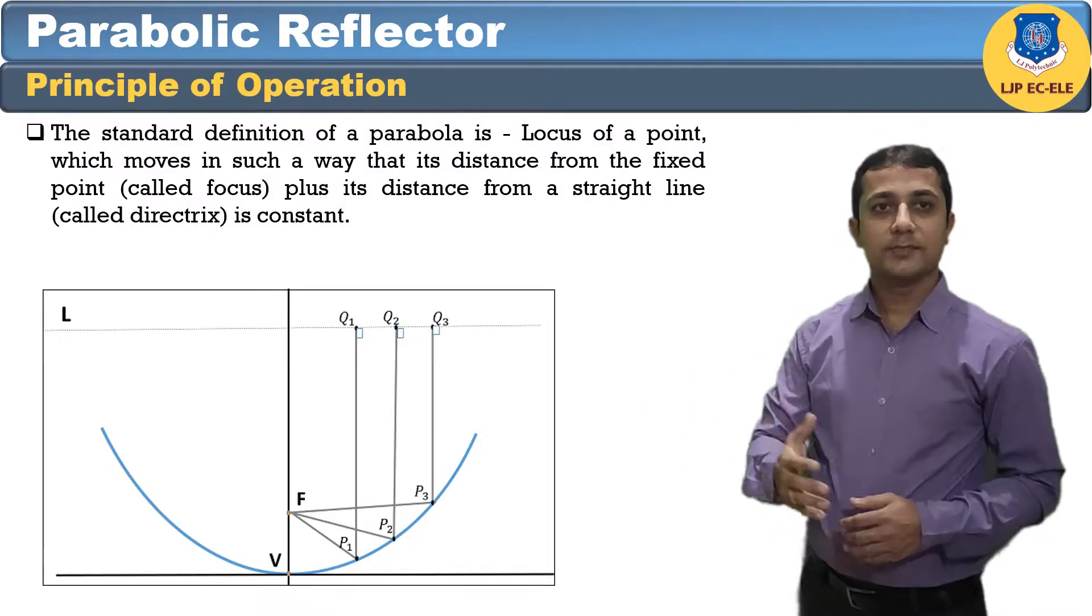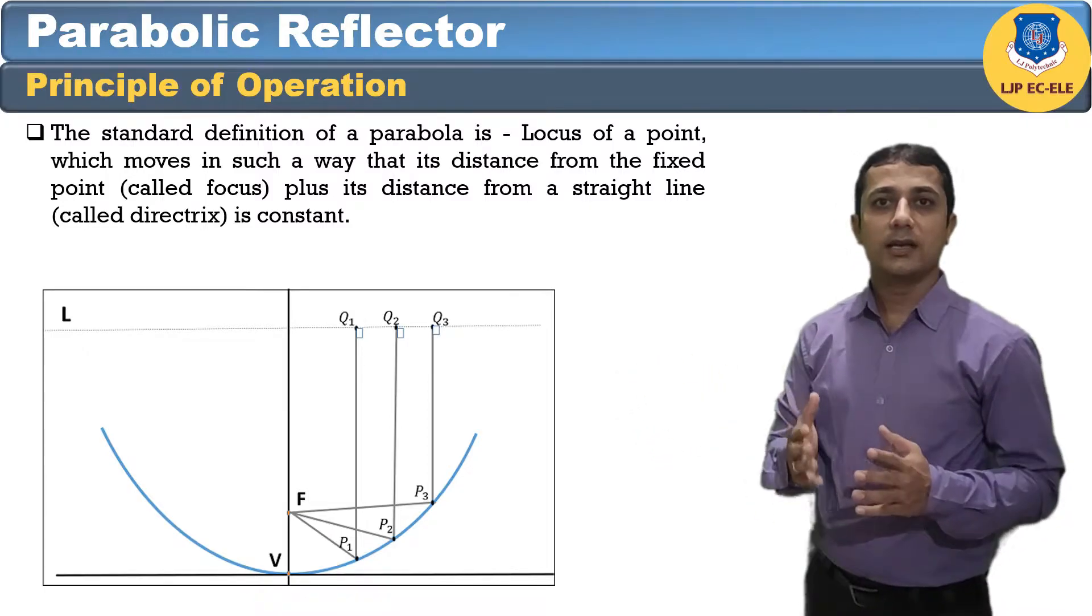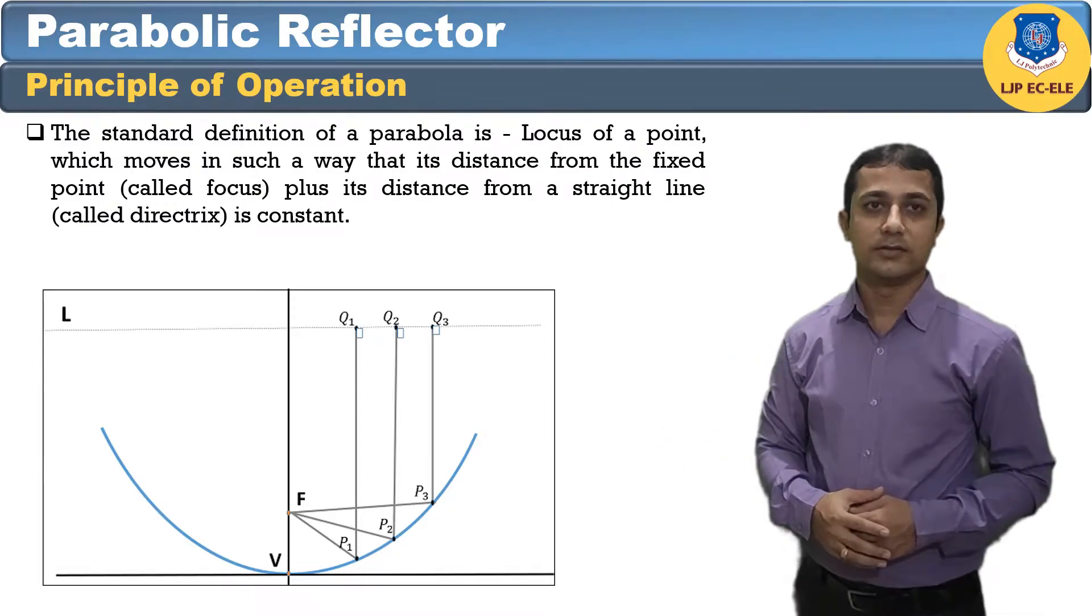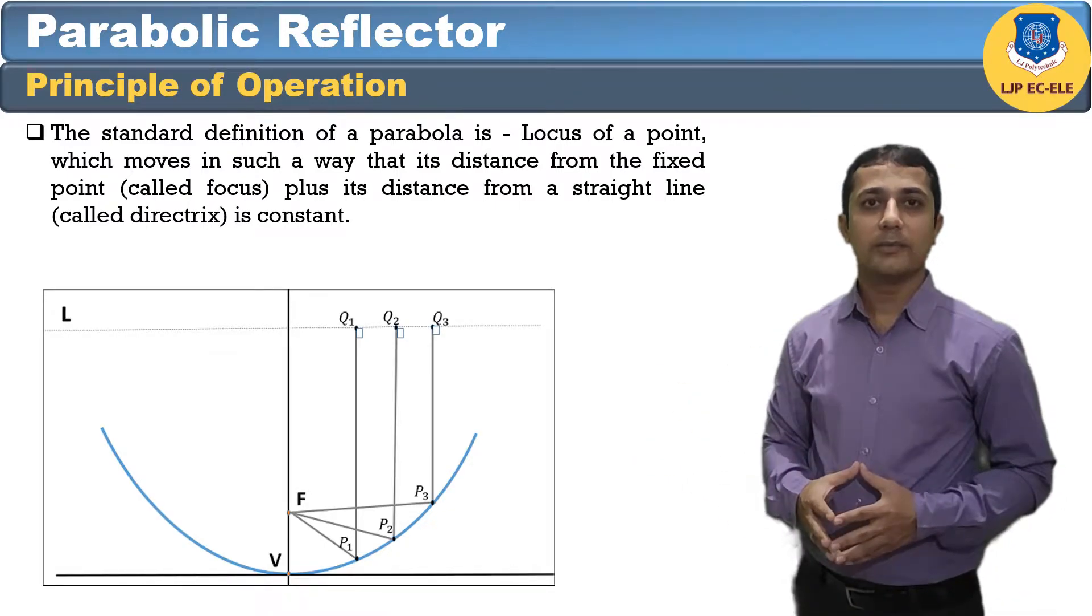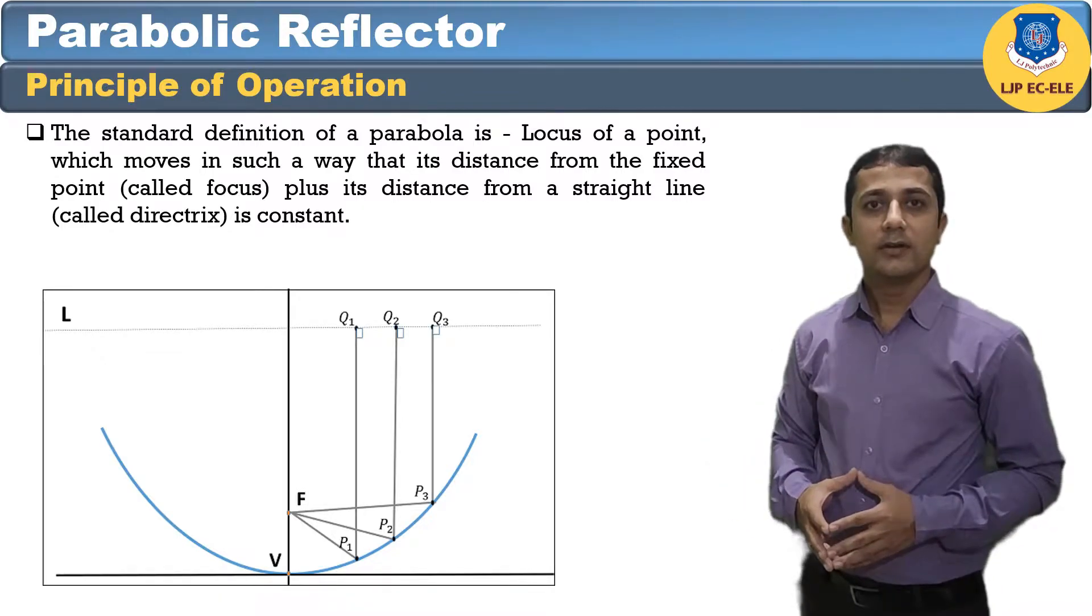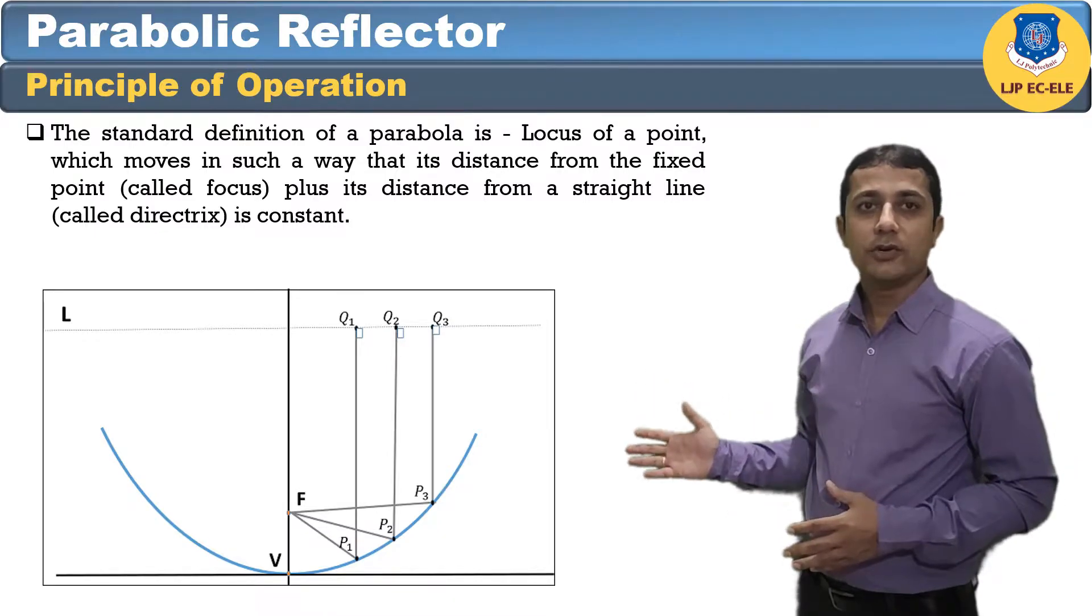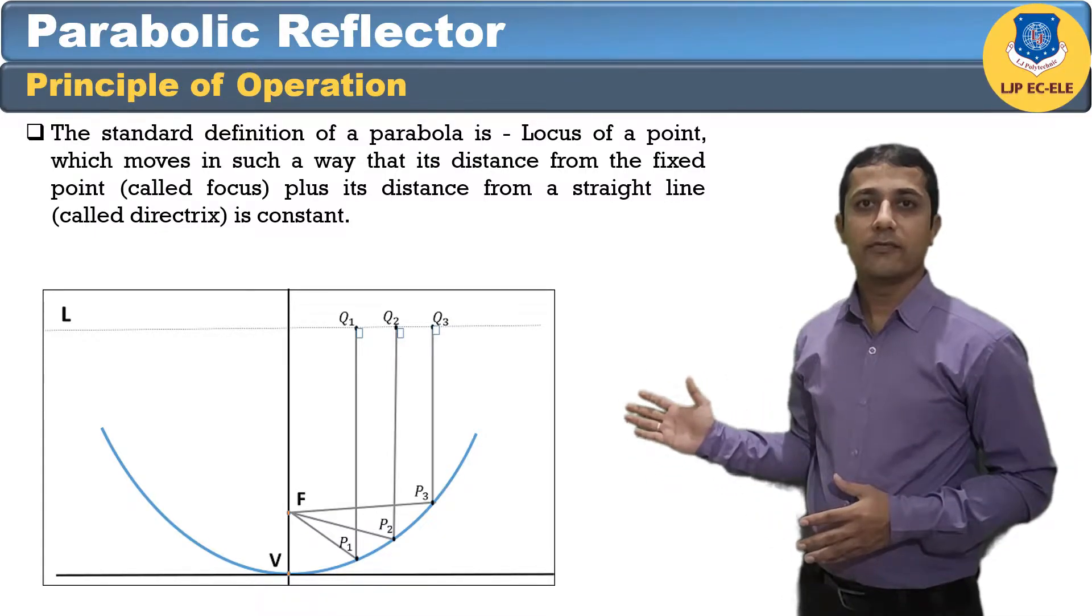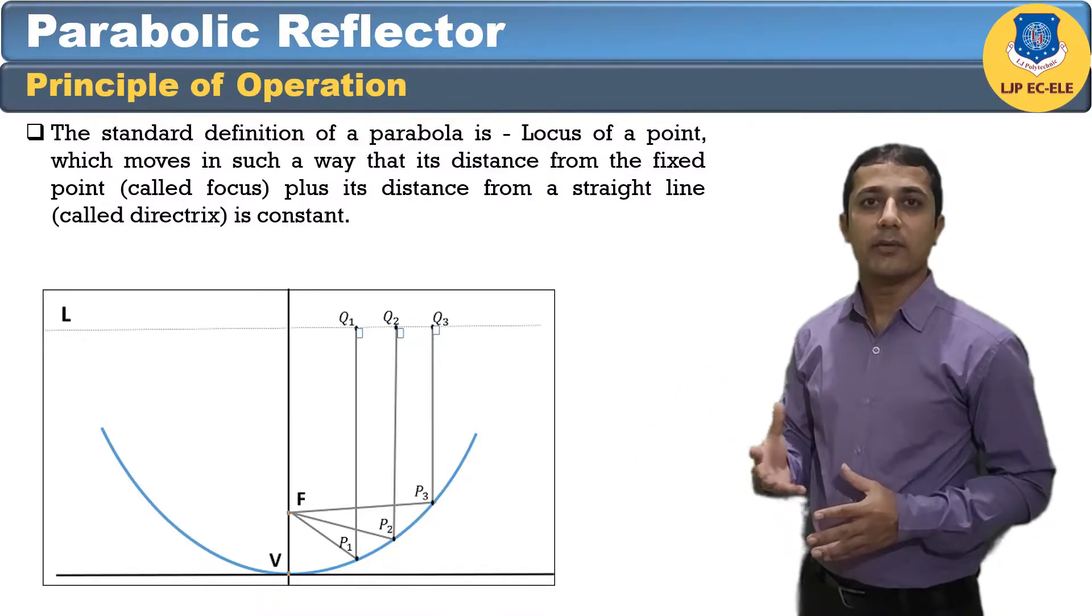Hence, as per the definition, the distance between F and L lie constant with respect to the wave being focused. The reflected wave forms a collimated wavefront out of the parabolic shape. The ratio of focal length to aperture size, known as F over D ratio, is an important parameter of parabolic reflector. Its value varies from 0.25 to 0.5.